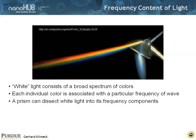White light consists of a broad spectrum of colors. Each color is associated with a particular frequency of the wave. And as you know, you can split white light on a prism, and it gives you all these beautiful frequency components of a rainbow.